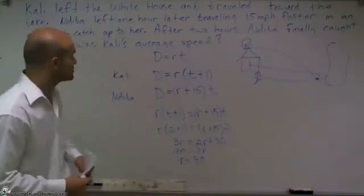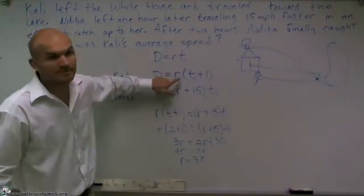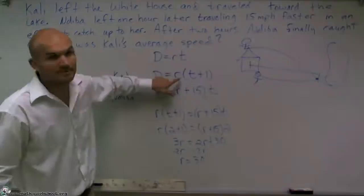So therefore, when it asks what is Callie's average speed, that's going to be her rate R. Well, her R is equal to 30. So her average speed is going to be 30 miles per hour. And that's how you solve the distance rate problem.